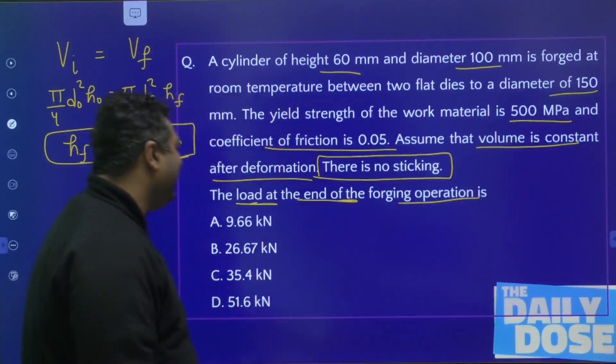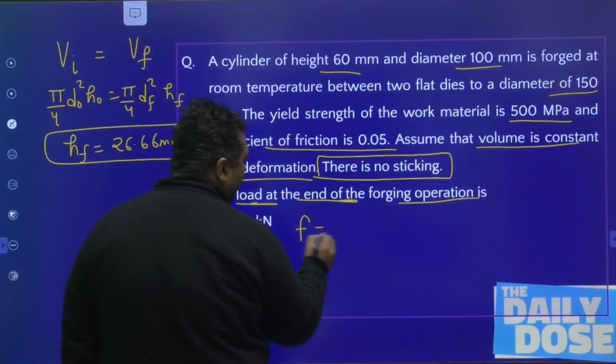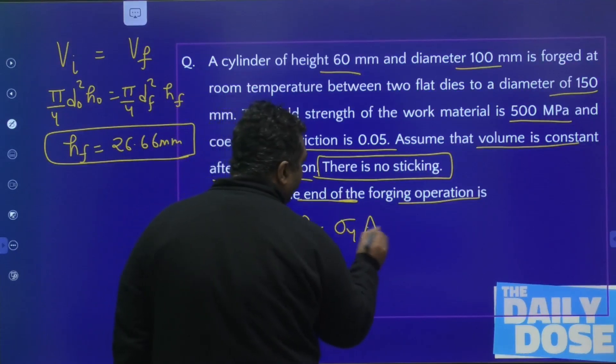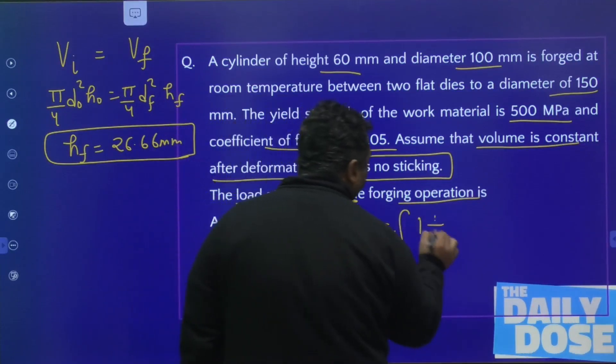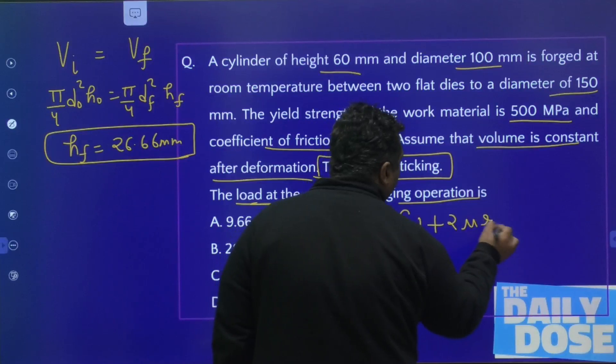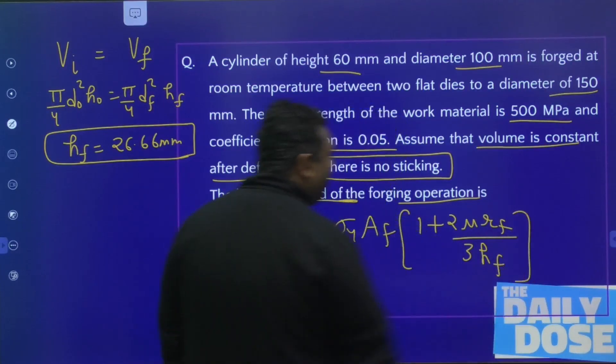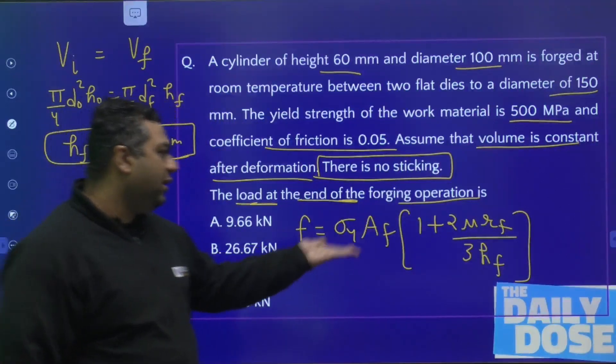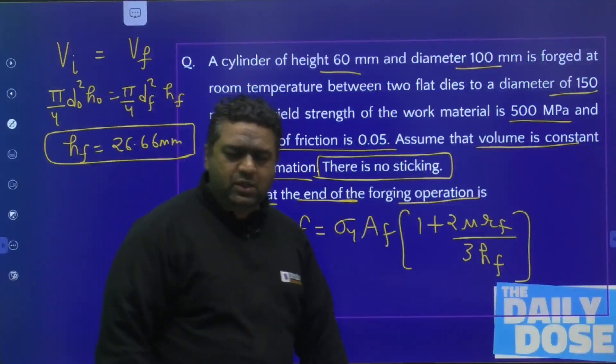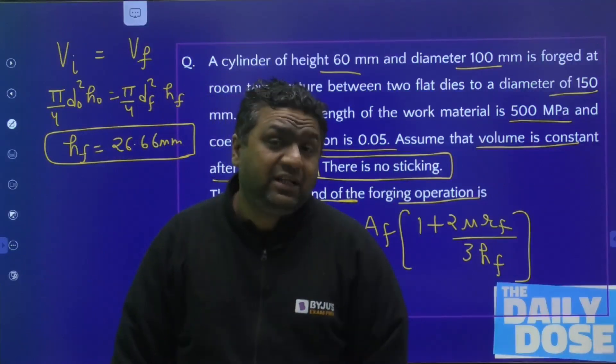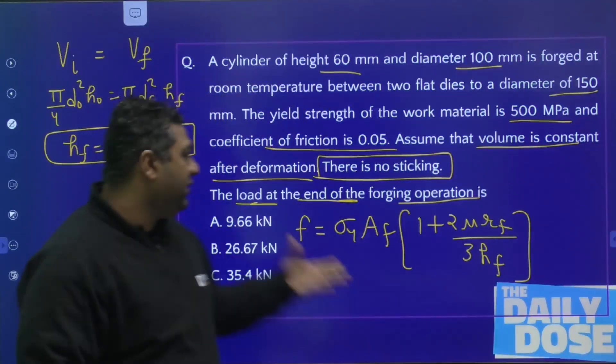We remember a formula: forging force = σy Af (1 + 2μrf/3hf). We use this formula but we do not remember this is valid at the end of forging operation. That is why I have taken this question—to tell you this formula is valid at the end of forging operation.